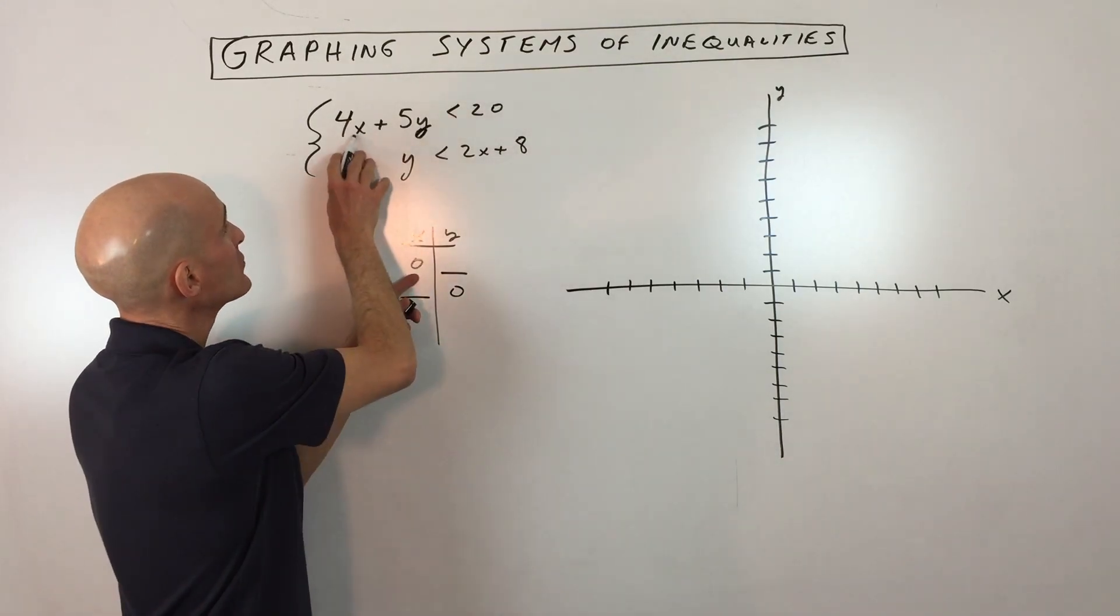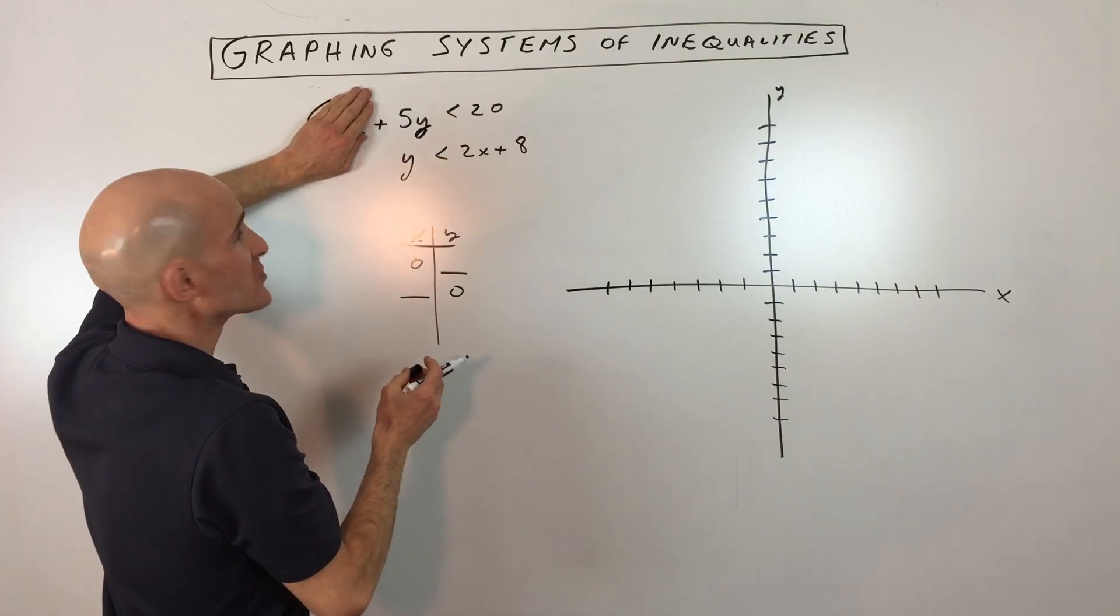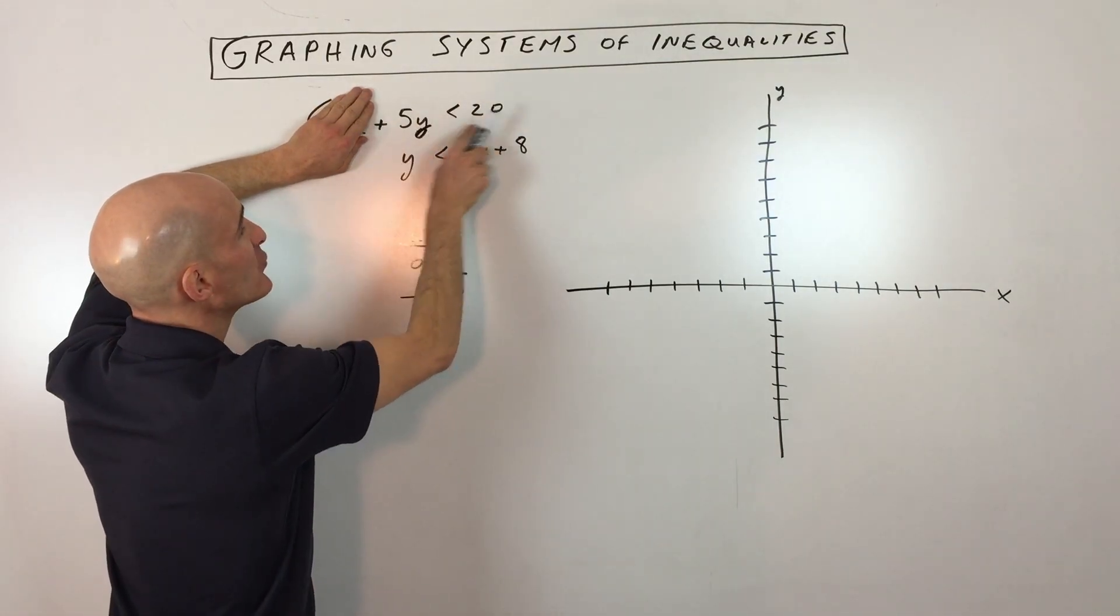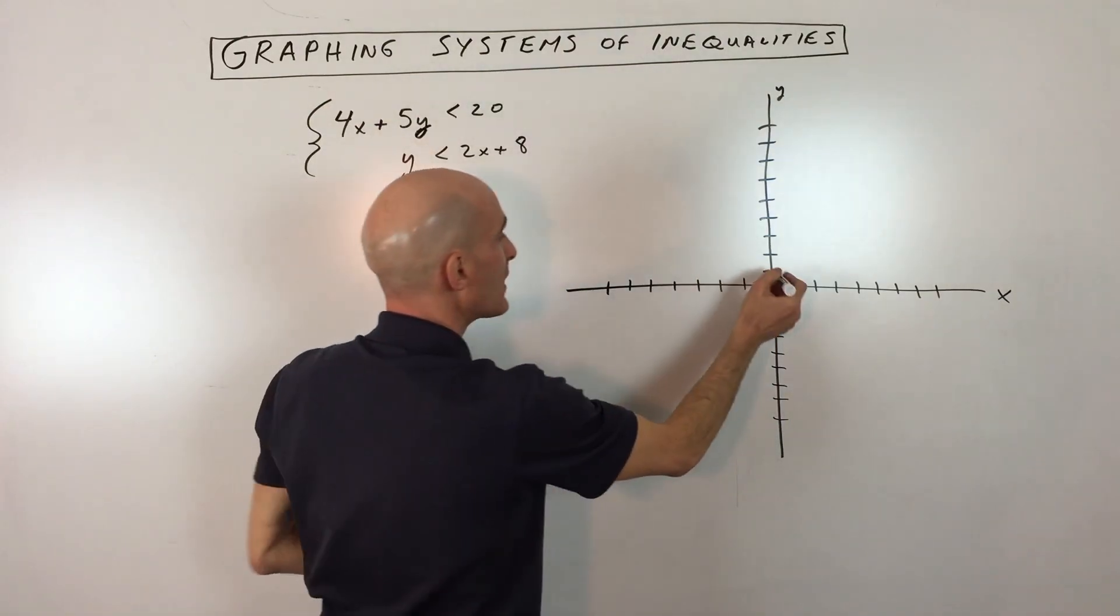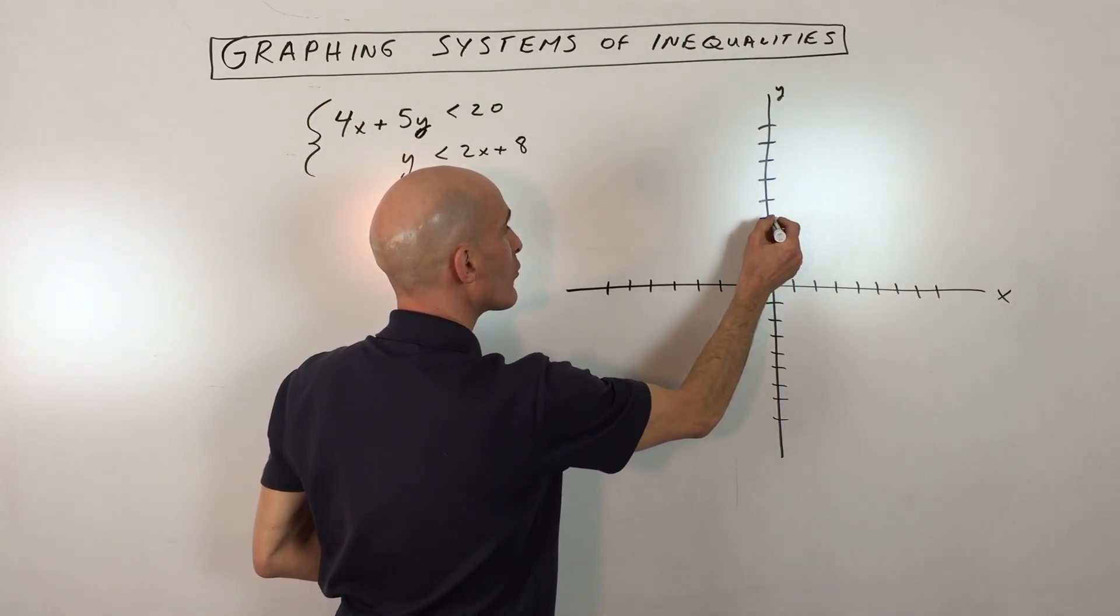If I set x to zero, zero times four is just going to be zero. If we divide both sides by five, you can see that the y-intercept is four. So I'm just going to go ahead and one, two, three, four. There's our point right there.